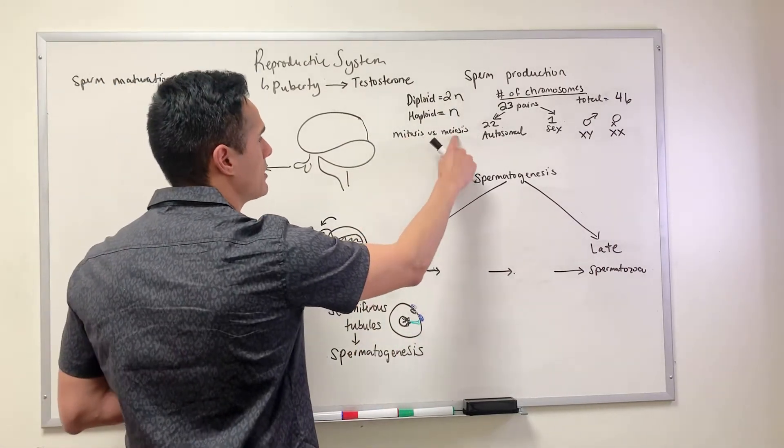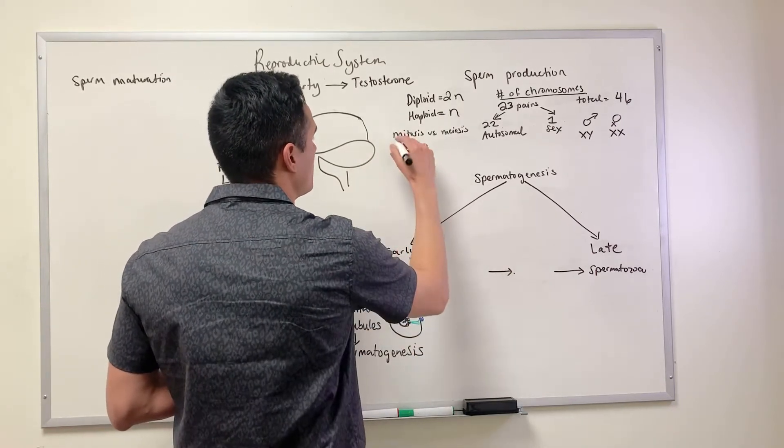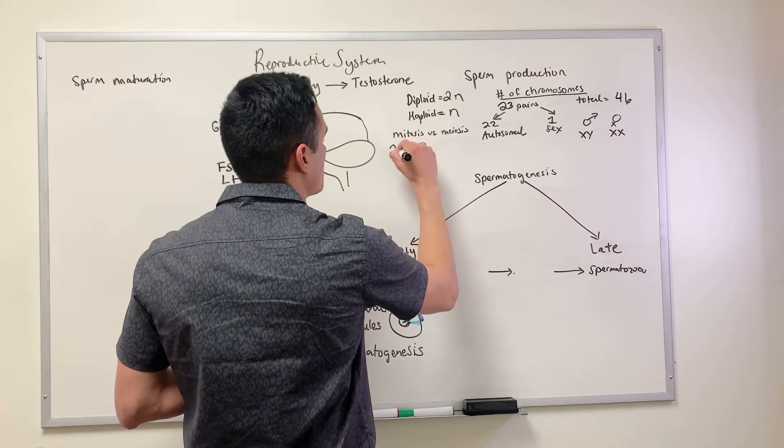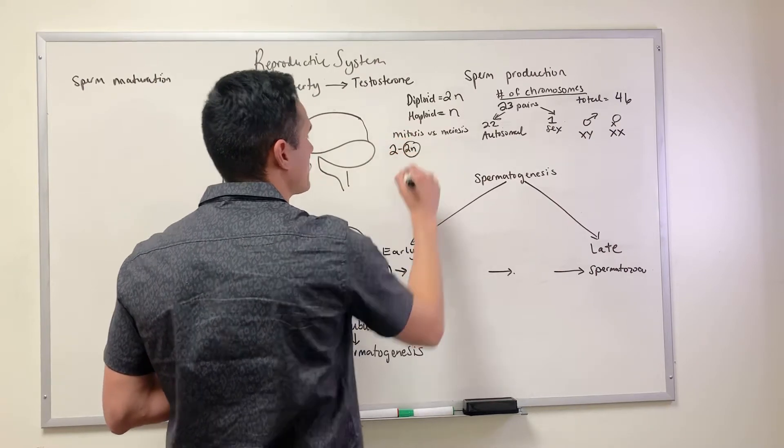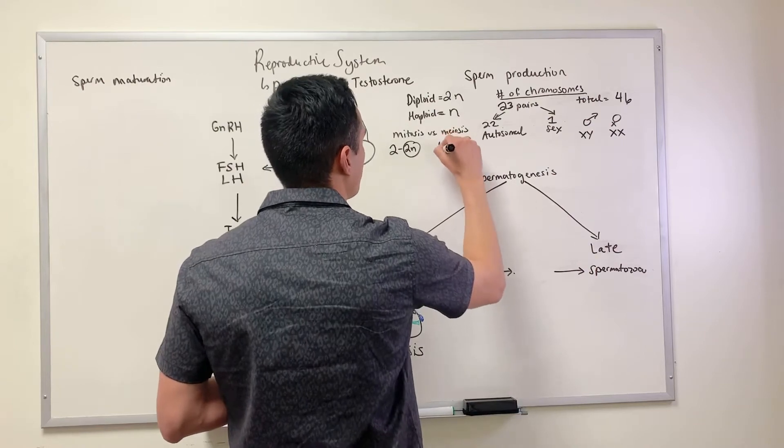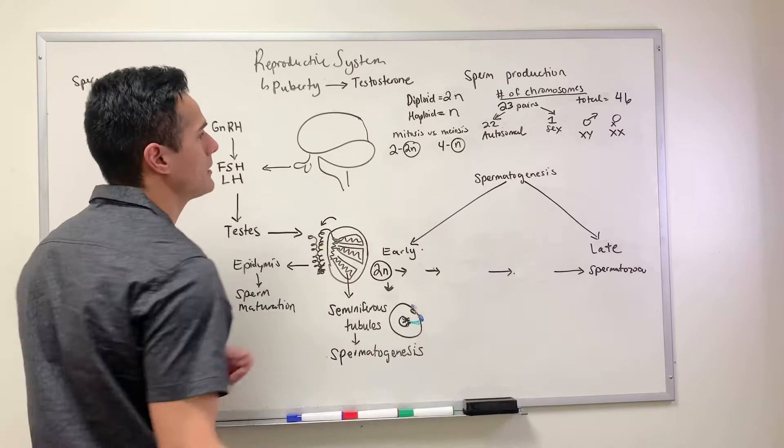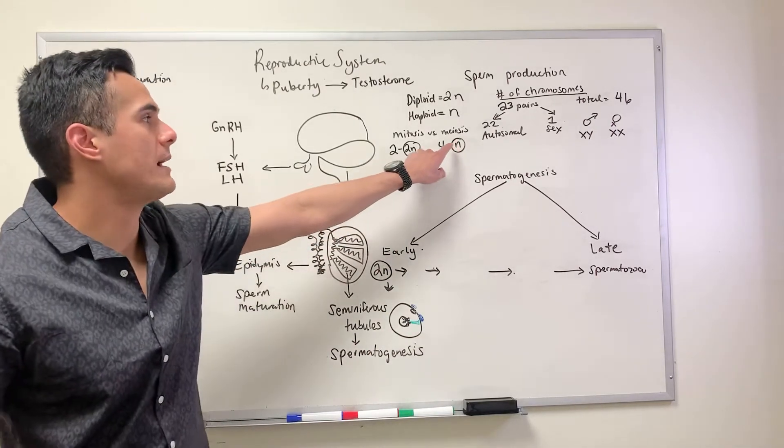Now we need to talk about what's the difference between mitosis versus meiosis. With mitosis, the end result is we get two diploid cells, compared to meiosis where we get four haploid cells.